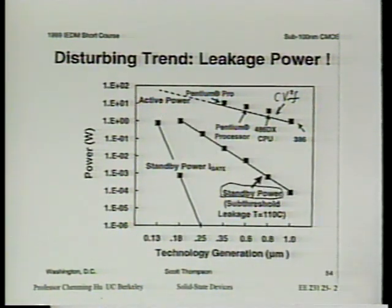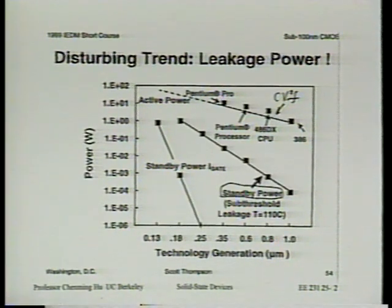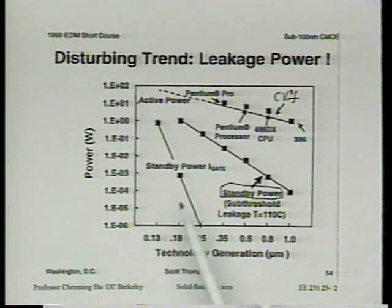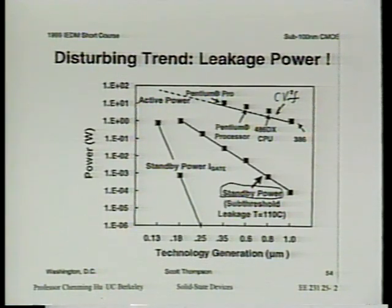That's why we discussed structural changes like ultra-thin-body double-gate devices. But now we're asking: if we do want to continue reducing oxide thickness, is there a way to avoid the leakage disaster? The answer is to change the material — don't use SiO2.